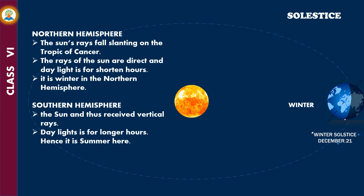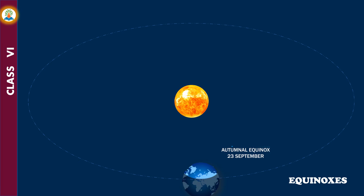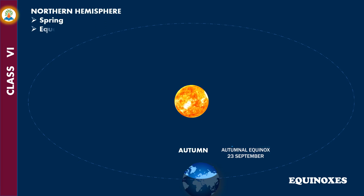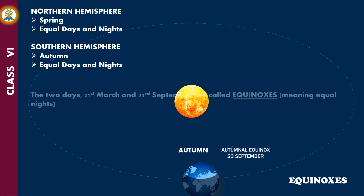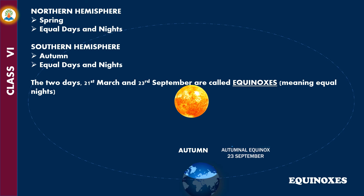On 21st December, the situation is the complete opposite of 21st June. On 23rd September, the Sun shines vertically over the equator, causing equal days and nights all over the Earth. At the same time, the Northern Hemisphere has autumn while the Southern Hemisphere has spring. These two days — 21st March and 23rd September — are called equinoxes.